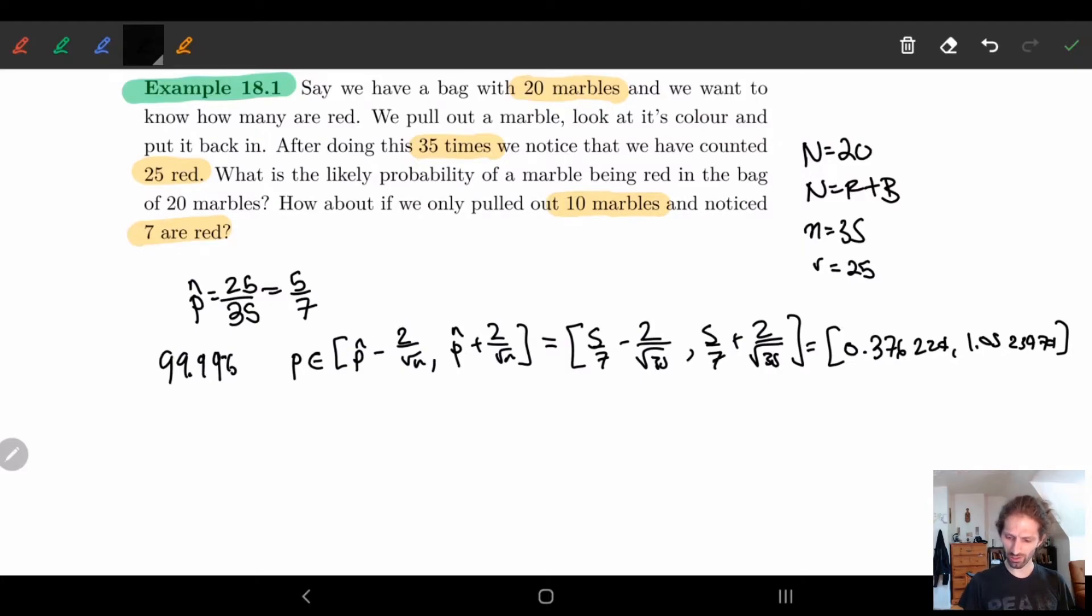It's basically saying we have between 37% and 105%. Like that's telling us nothing.